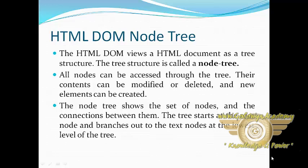All nodes can be accessed through the tree. Their contents can be modified or deleted, and new contents or elements can be created. The node tree shows the set of nodes and the connection between them. The tree starts at the root node and branches out to the text node at the lowest level of the tree.